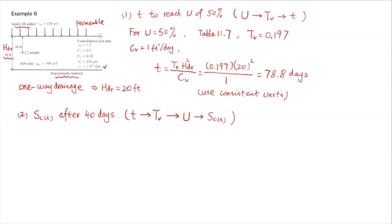For this example, t is 40 days. Cv and HDR, again, are 1 and 20. We know these two values, so we can calculate time factor. Substituting these numbers: Cv is 1, small t is 40 days. We're estimating U at 40 days. HDR is 20, so it's 20 squared. The time factor for part two is 0.1. So we have this time factor Tv.